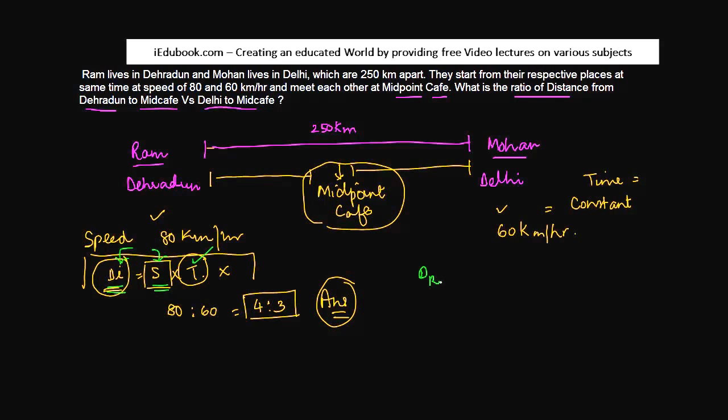Basically you will have distance of Ram as speed of Ram into time. Distance of Mohan, speed of Mohan into time. If you have to find out the ratio of these two, you divide this by this, this by this and this by this. We know this is the same, so we cancel this out.